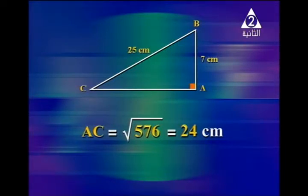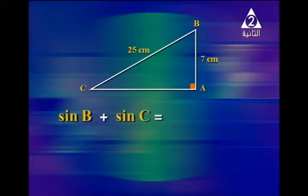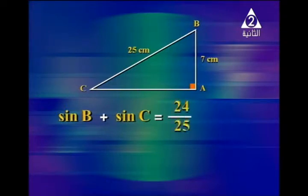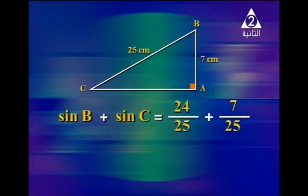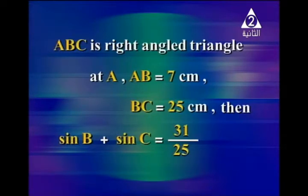Now we can find sine B plus sine C. Sine B equals opposite over hypotenuse, which is 24 over 25. Sine C equals opposite over hypotenuse, which is 7 over 25. These two fractions have the same denominator, so adding the numerators gives 31 over 25.